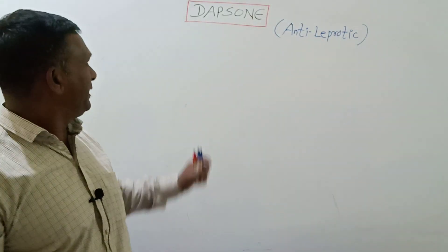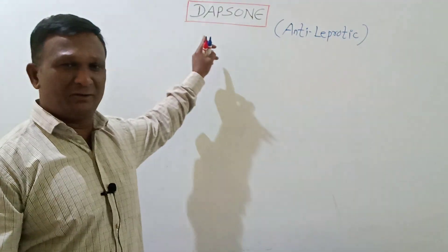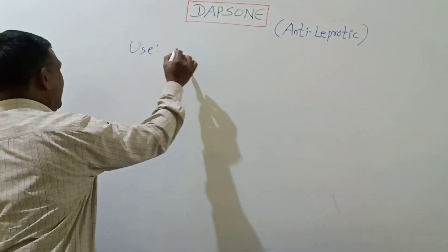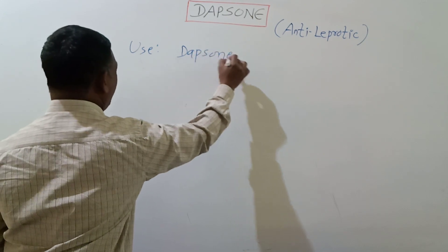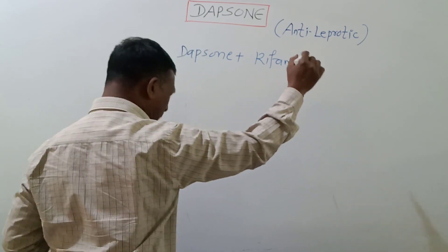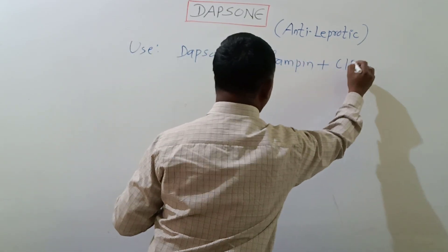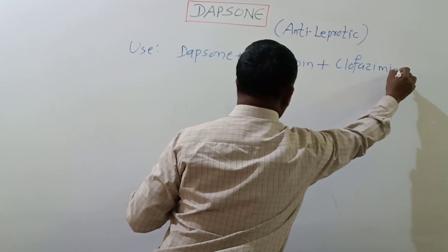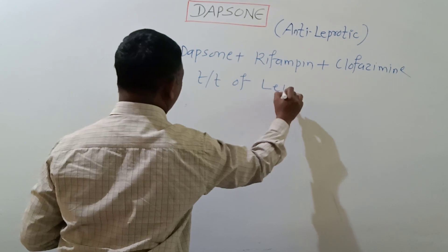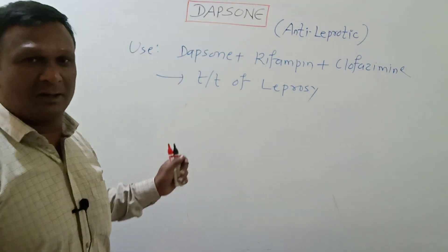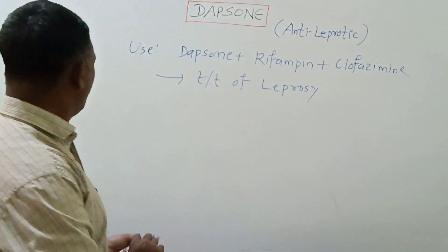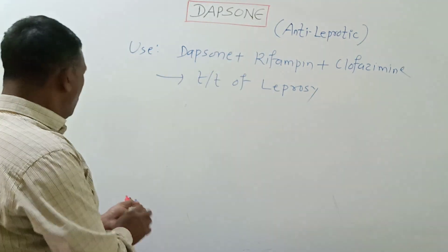Hello dear students, our today's topic is the medicinal compound Dapsone. This drug is used in combination with rifampin and clofazimine in the treatment of leprosy. Thus this drug belongs to the therapeutic category of anti-leprotic drugs. Now let's move on to the mechanism of action of this compound.